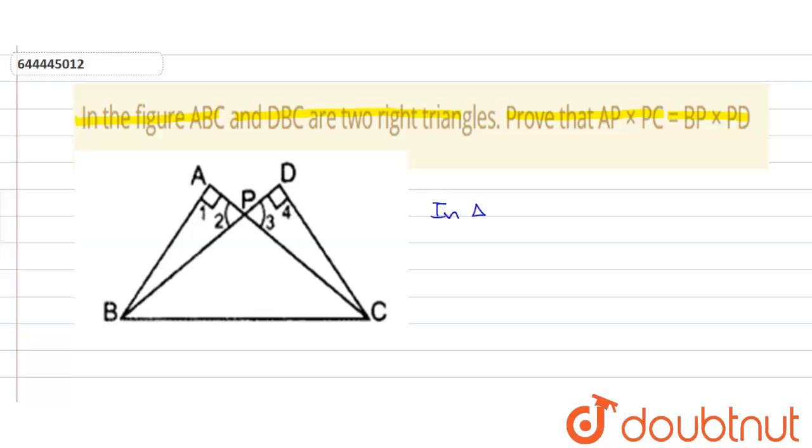In triangle APB and triangle DPC, angle 1 is equal to angle 4 because each angle is 90 degrees, and angle 2 is equal to angle 3 because they are vertically opposite angles.